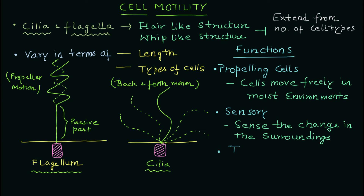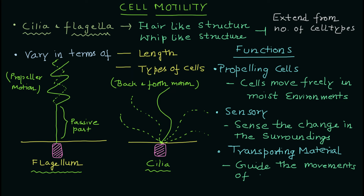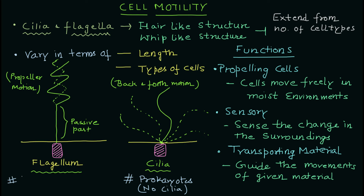The third important function is transporting material — they can transport and guide material to a specific place or in a particular direction. It is also worth noting again that in prokaryotic cells, cilia are absent, and the structure of the flagellum is completely different from that in eukaryotic cells.